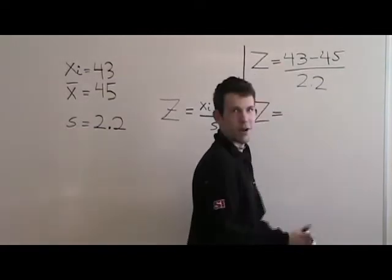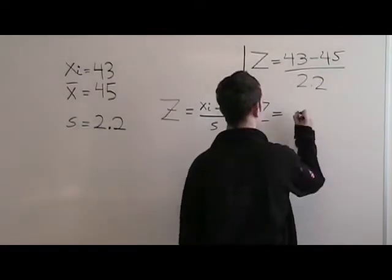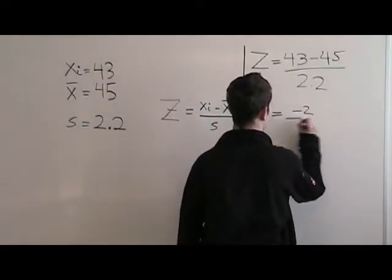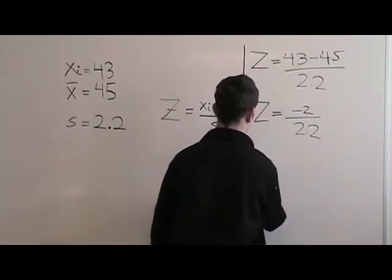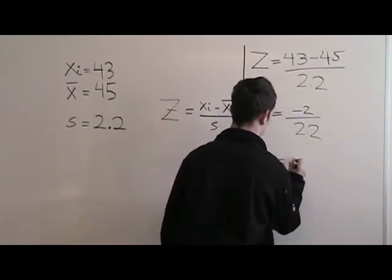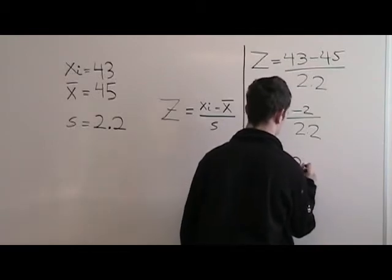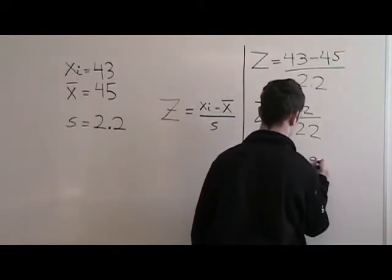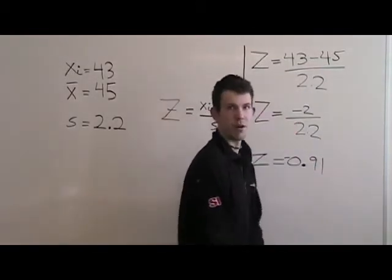43 minus 45 is negative 2. Divide by 2.2, the z-score is negative 0.91.